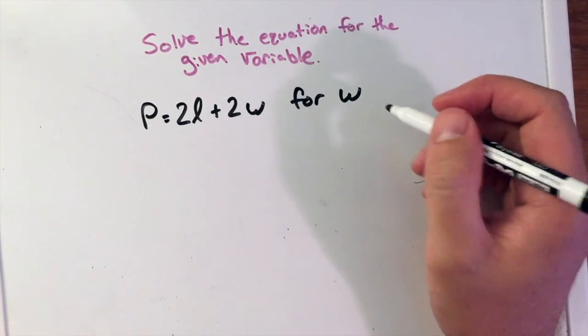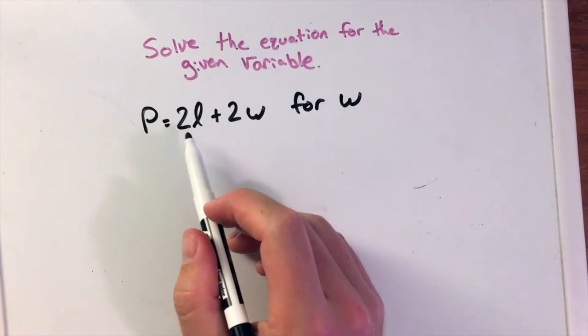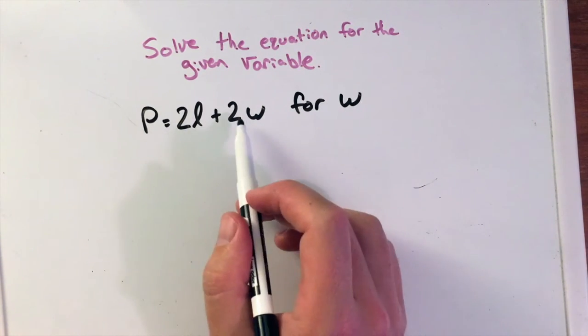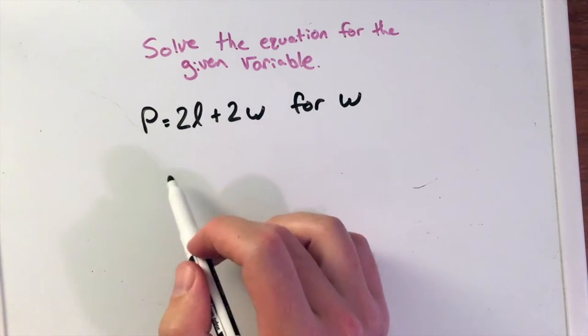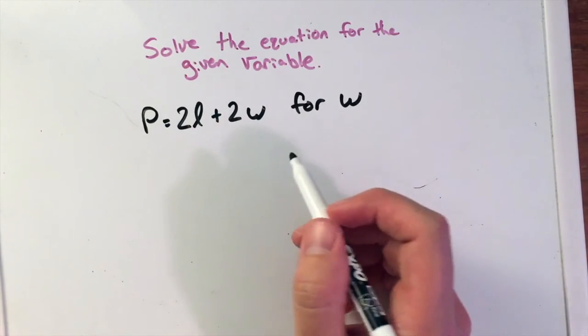But we want to solve for W. So there's a few ways you can go about this. We could subtract the 2L to both sides or we could pull out a 2 and then divide it. So I'm going to solve it both ways and we'll see how we can get to the answer that way.